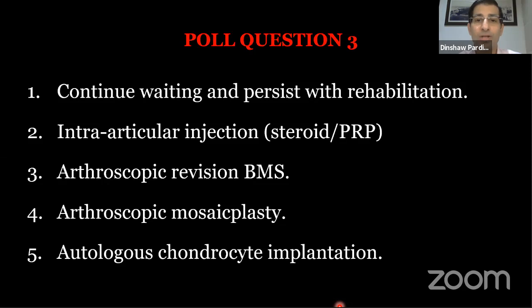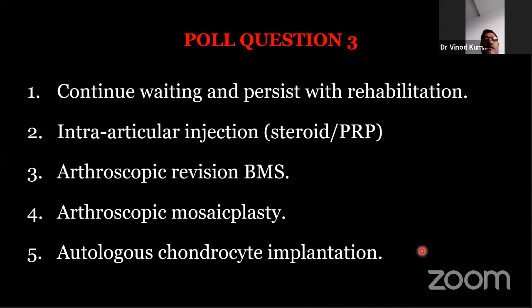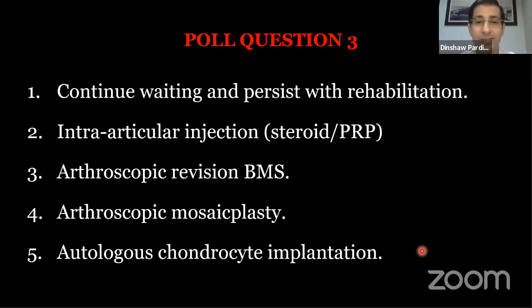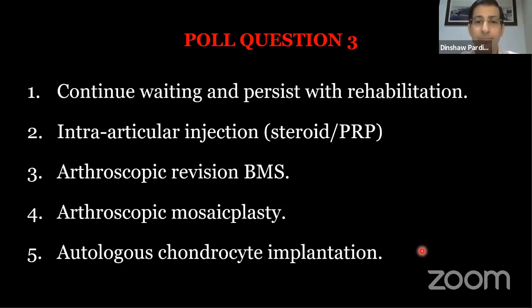Poll results: 71% chose mosaicplasty, some would inject and get through the season, 14% would wait. Dr. Vinod chose mosaicplasty — the patient is a competitive sportsperson, the defect is around 2 cm or less, and he's young. For a demanding young sportsman with a small to medium defect, mosaicplasty is the most suitable option. Dr. Narvekar would continue waiting — nine months is too short, and the MRI shows no subchondral bone edema, so the pain may not directly come from this small cartilage loss.